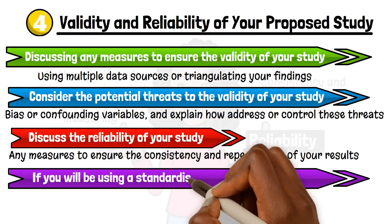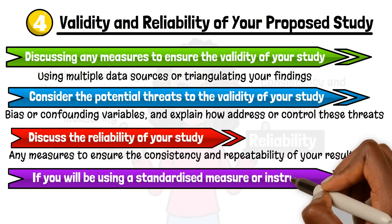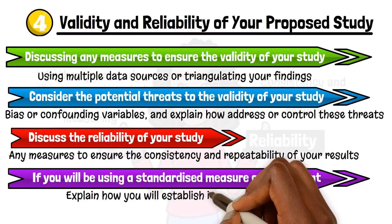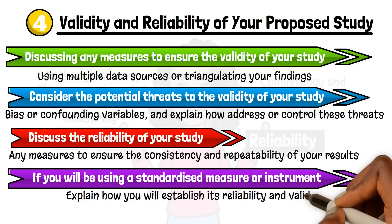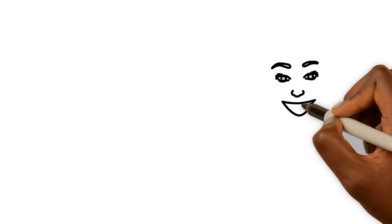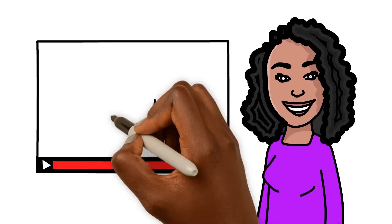Fourth, if you will be using a standardised measure or instrument, explain how you will establish its reliability and validity. By following these four steps, you can write a clear and effective research methodology that will help you ensure the validity and reliability of your proposed study. That's it — you can now develop your research methodology.